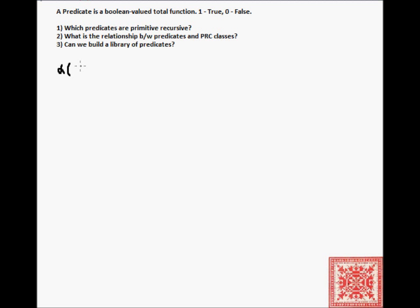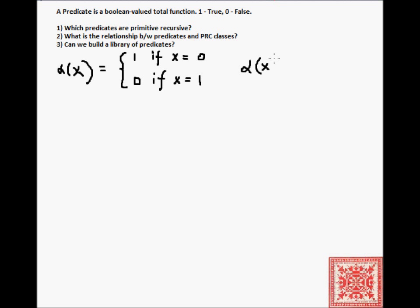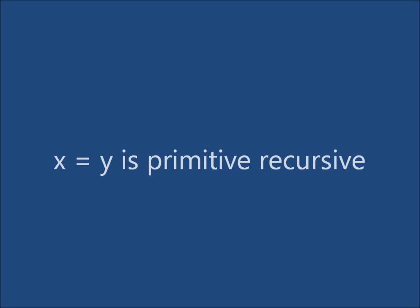Let's review our alpha predicate that we have previously proved to be primitive recursive. Alpha(x) is equal to 1 if x equals 0, and 0 if x is not equal to 0. We have shown alpha to be primitive recursive by defining it as 1 dot-minus x. You can review our previous screencasts on the theory of computation to see that proof.